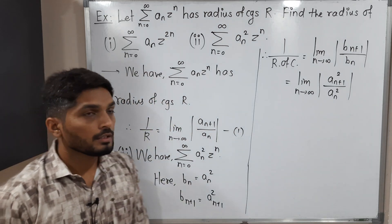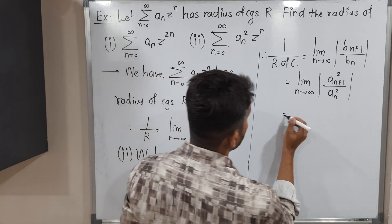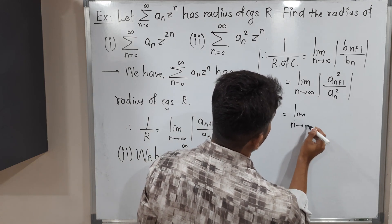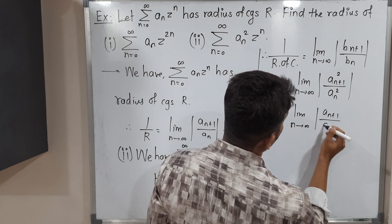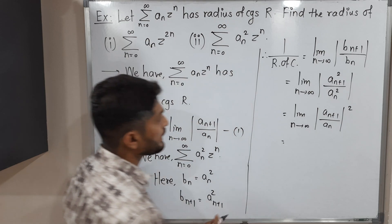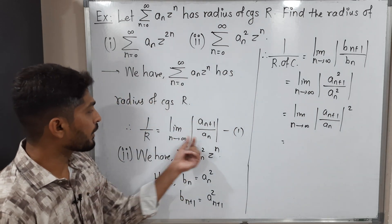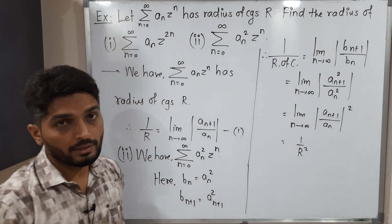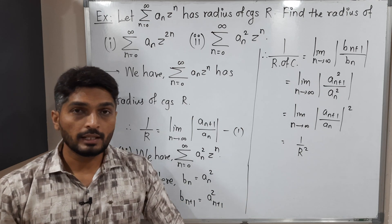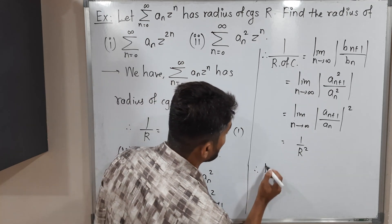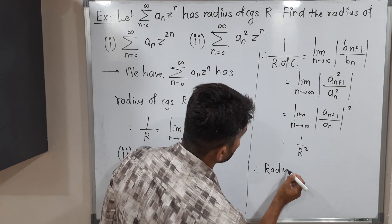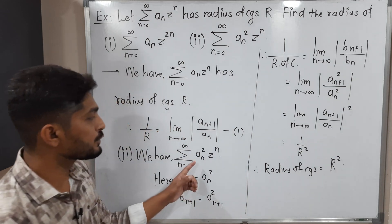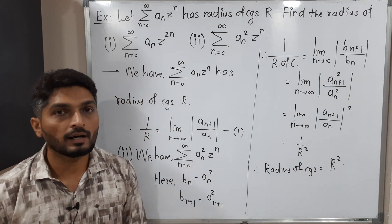By the property of modulus, we can write this as lim_{n→∞} |a_{n+1}/a_n|², which equals (1/r)² = 1/r². So 1 over the radius of convergence equals 1/r². Taking reciprocals of both sides, the radius of convergence equals r². Therefore, the radius of convergence of the given power series summation (a_n)² z^n is r².